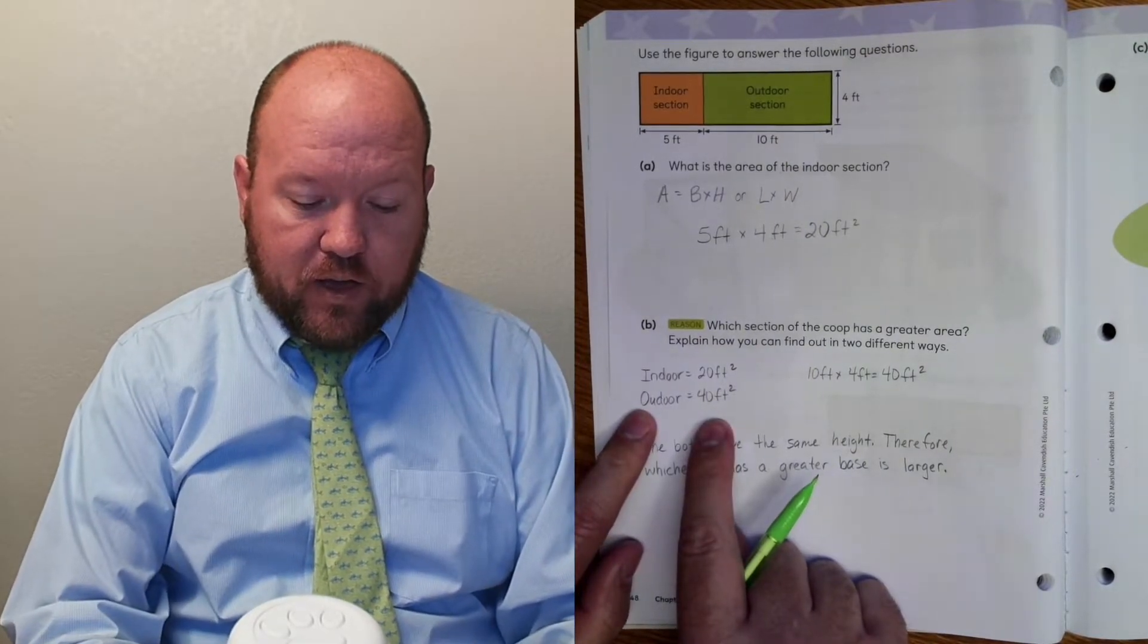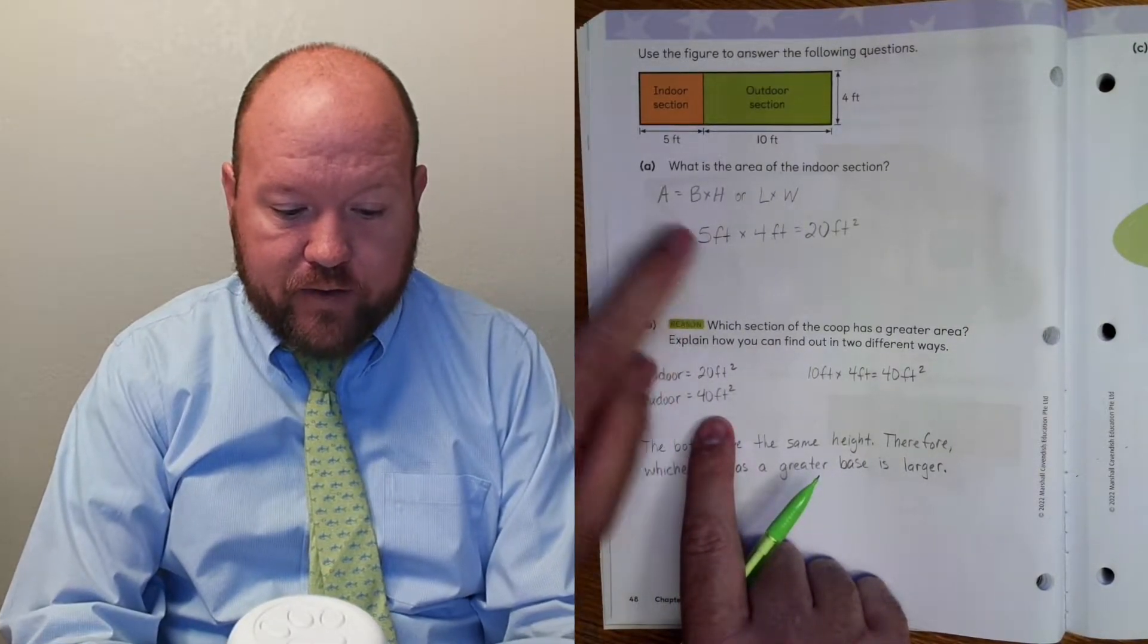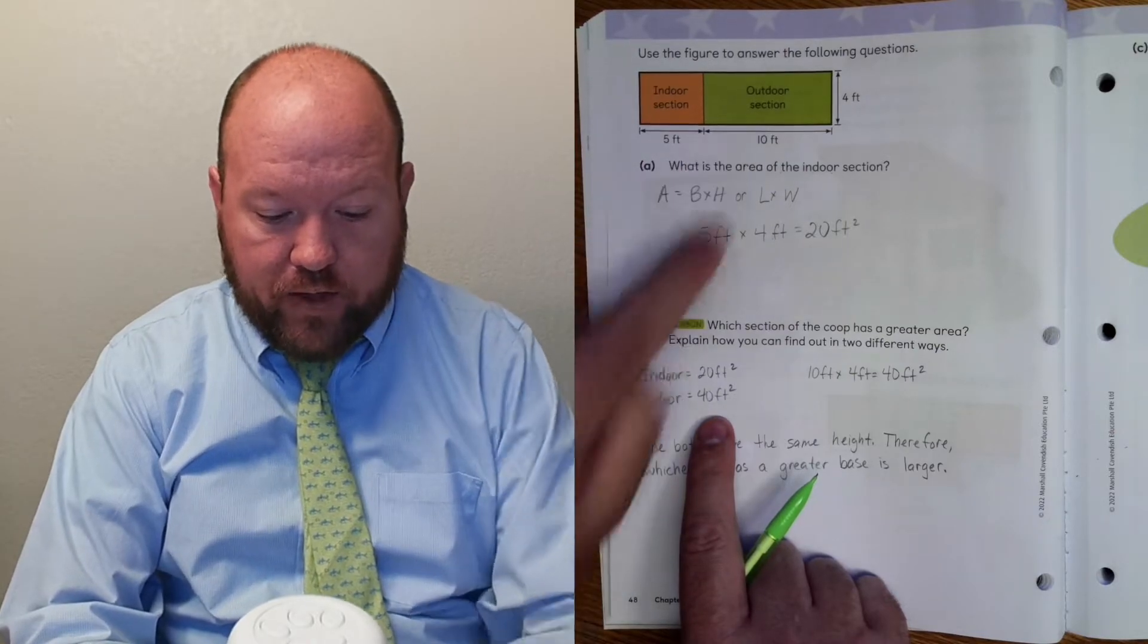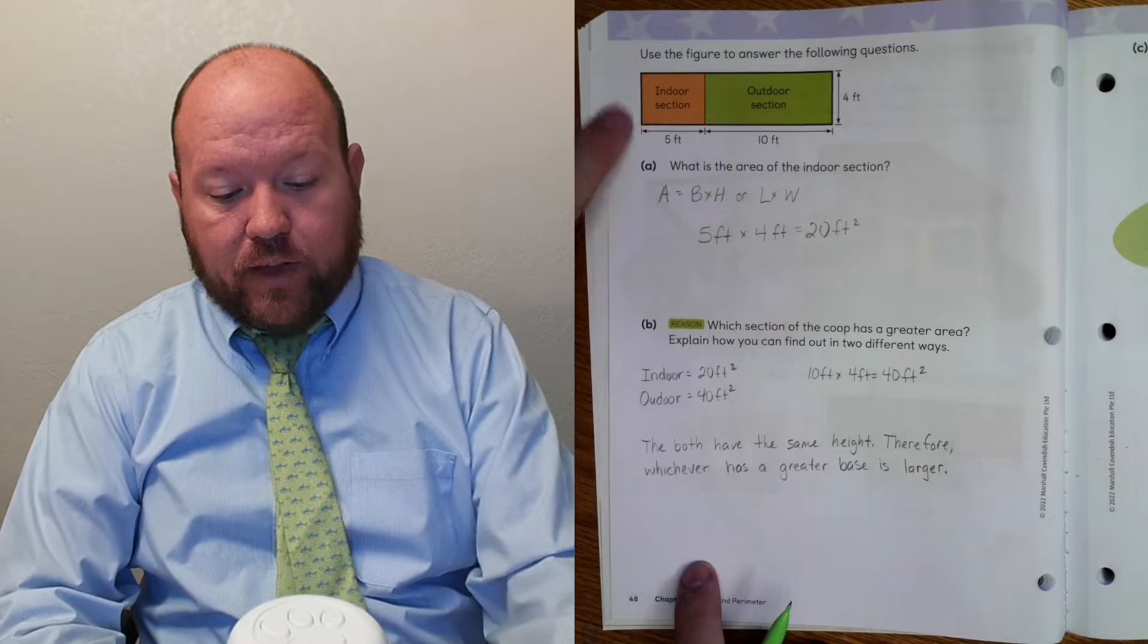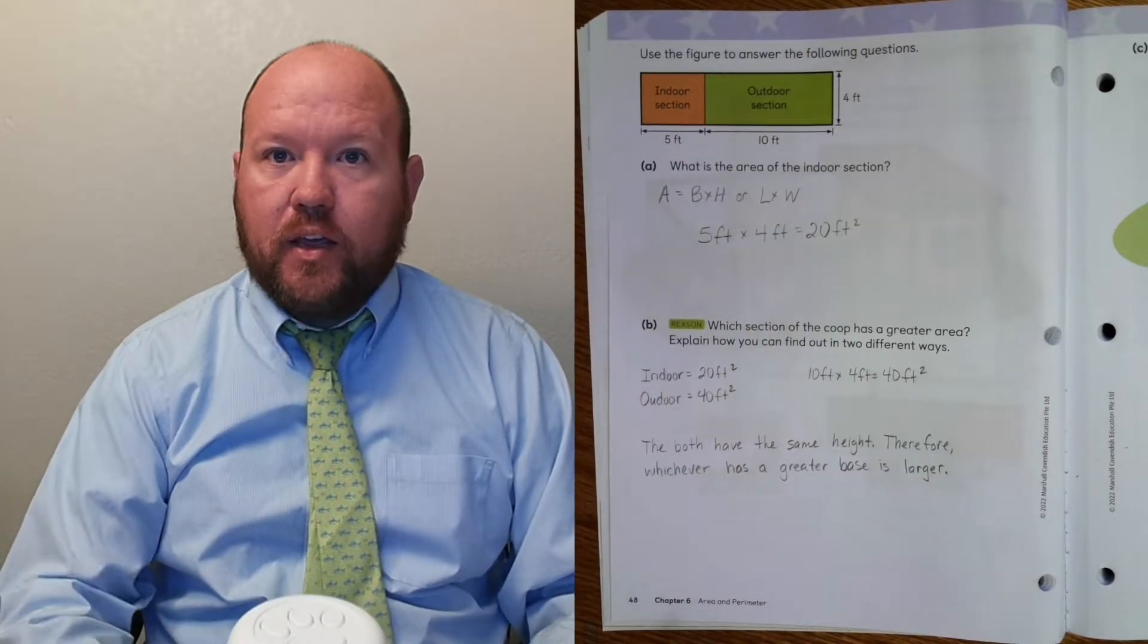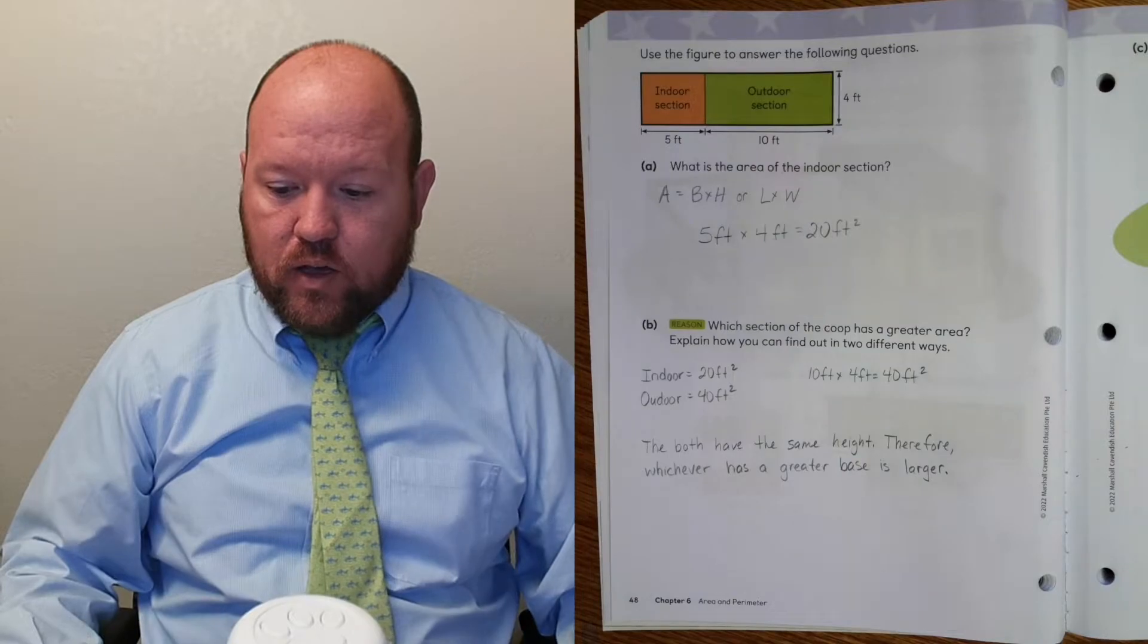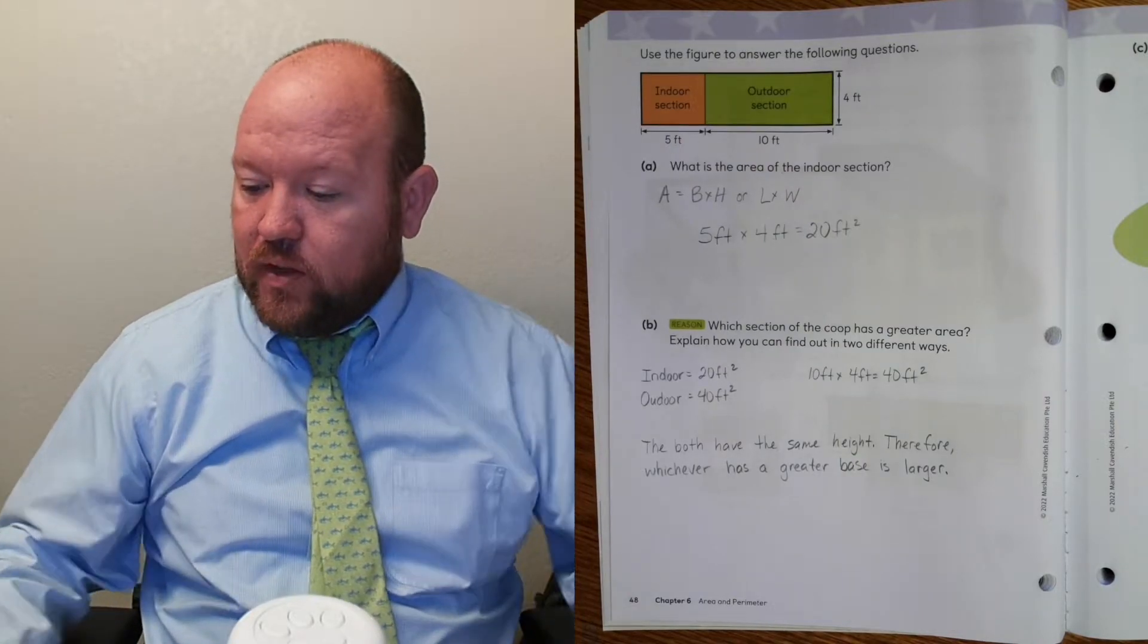Another way to do it would be to say, I know they both have the same height. But what do I know about the outdoor section? The outdoor section has a greater base. So therefore, I don't have to do the math. If they have the same height, whichever one has a greater base is going to be larger. Either of those ways would work. Let's turn to page 49.